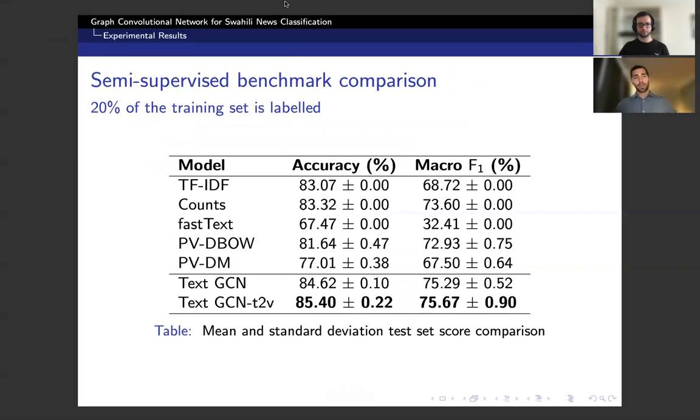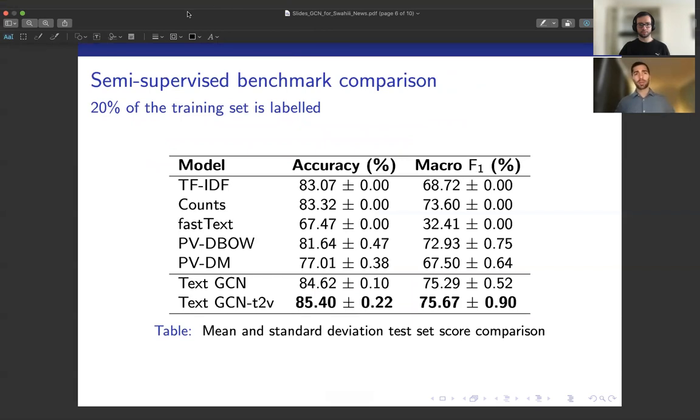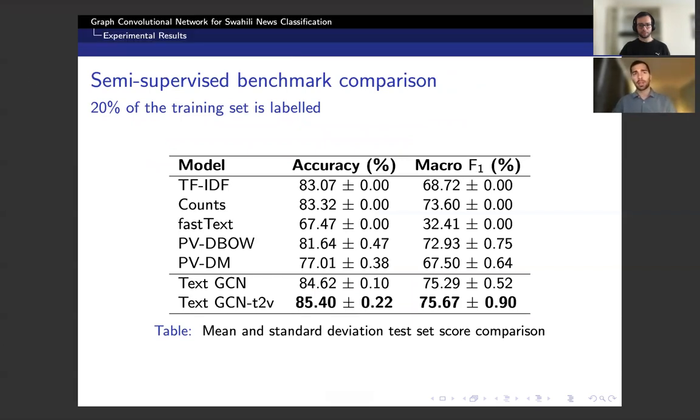Moving into the experimental results. In this table, we have the test accuracy and macro F1 score for the document classification task with the mean and standard deviation for each model shown. For this task, only 20% of the training labels are used to train each model, making this semi-supervised. Because of class imbalance, we consider the F1 score to be the more important metric. The counts model and TF-IDF perform remarkably well given their simplicity. Looking toward the bottom of the table, we can see that the text-GCN variants perform the best out of all the models.